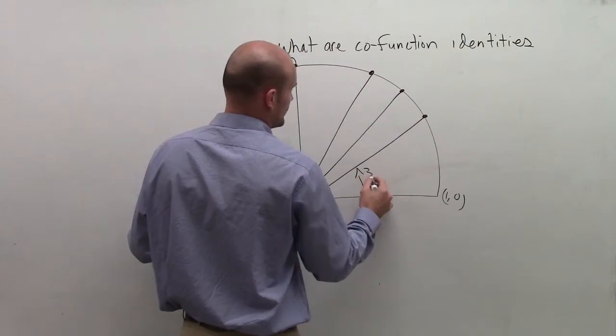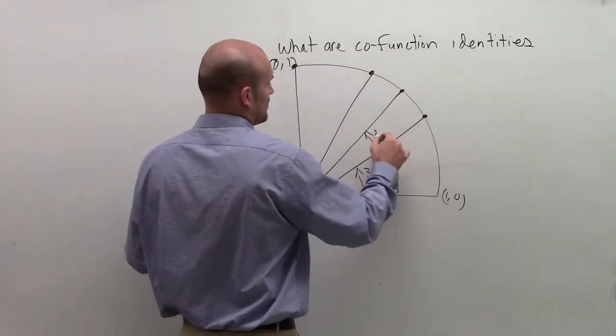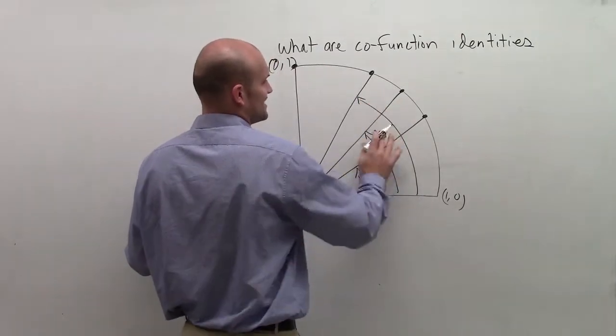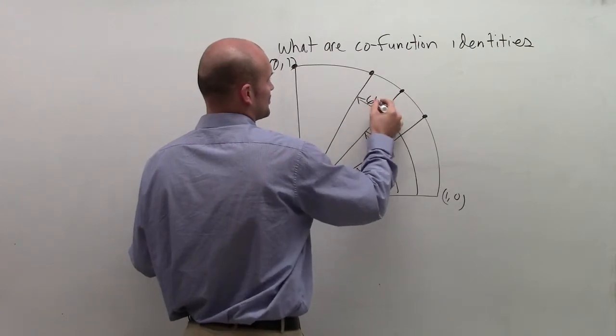So the first angle is 30 degrees. And hopefully by now, you know how to memorize the first quadrant of the unit circle. That is not 40 degrees, that's 45 degrees. And then therefore, this is going to be 60 degrees.